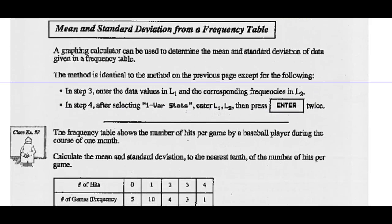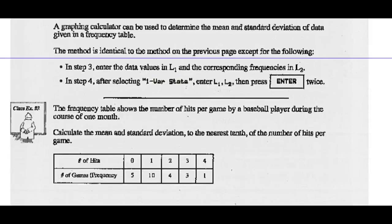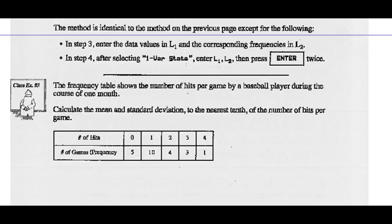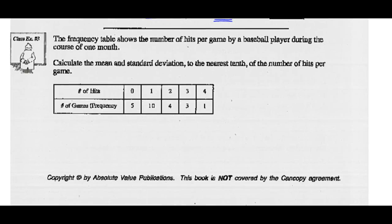Mean and standard deviation from a frequency table. A graphing calculator can be used to determine the mean and standard deviation of data given a frequency table. The method is identical to the previous approach, except in step 3 we enter data values in list 1 and frequencies in list 2, and we use one variable statistics telling it to use data from both list 1 and list 2. Let's do that for this information — go to our graphing calculators and let's find the mean and standard deviation of this data.